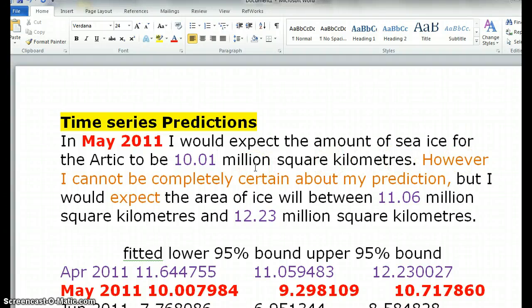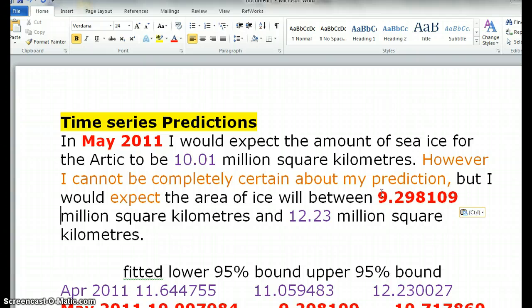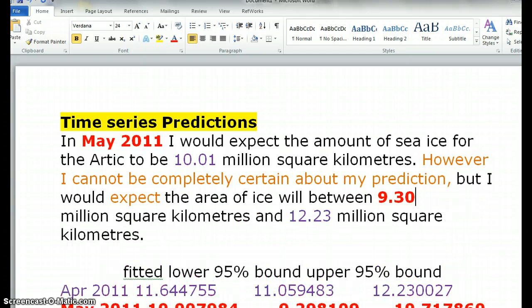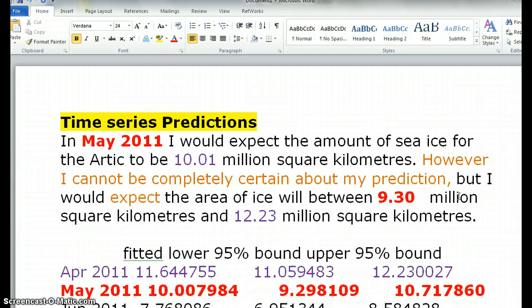However, I cannot be completely certain about my prediction. Very important to say that. But I would expect the area of sea ice to be between—so here's your 9 point something. You're going to round it to 9.30 million square kilometres. And this one here, grab it, pop it there.